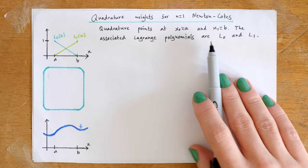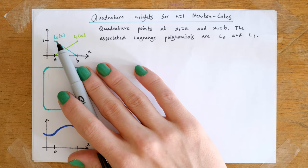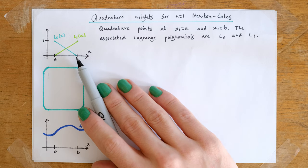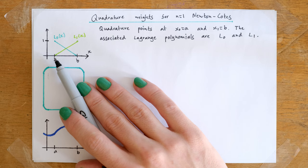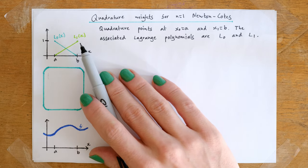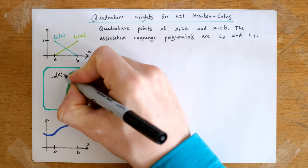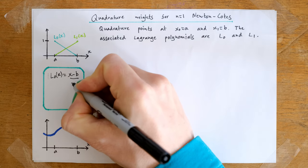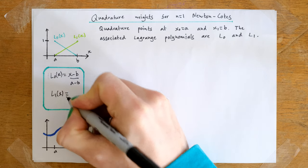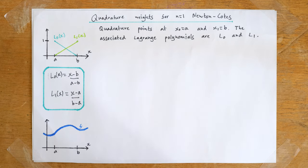The associated Lagrange polynomials will be l0 and l1. If we plot these Lagrange polynomials, they're both linear functions. l0 of x is 1 at x equal a and 0 at x equal b. l1 of x is 0 at x equal a and 1 at x equal b. The explicit algebraic expressions are: l0 of x equals x minus b over a minus b, and l1 of x equals x minus a divided by b minus a.